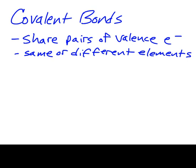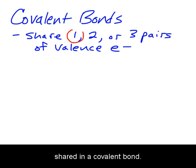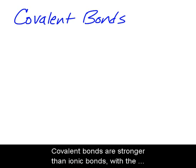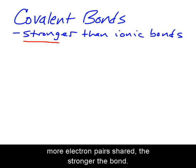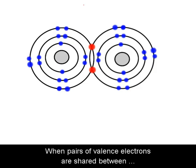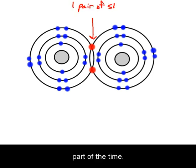One, two, or three pairs of valence electrons can be shared in a covalent bond. Covalent bonds are stronger than ionic bonds, with more electron pairs shared making the bond stronger. When pairs of valence electrons are shared between atoms, the valence shells of both atoms are filled at least part of the time.